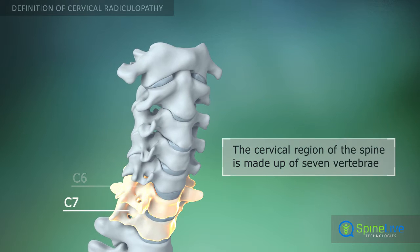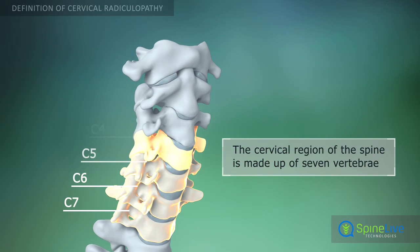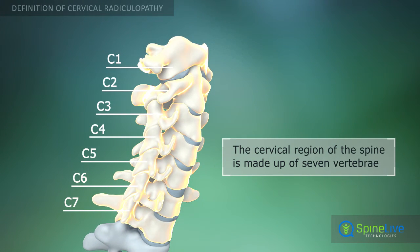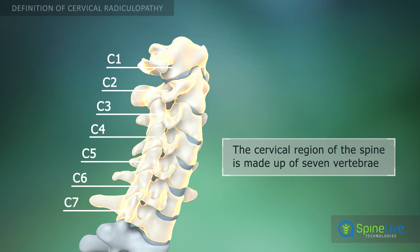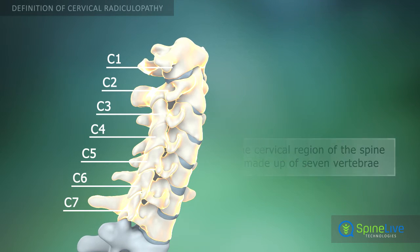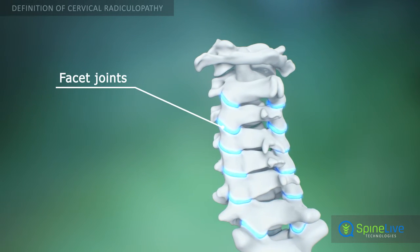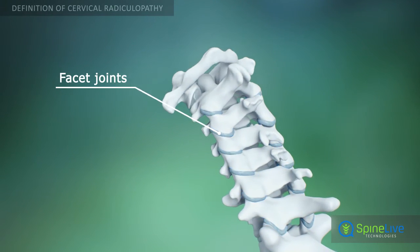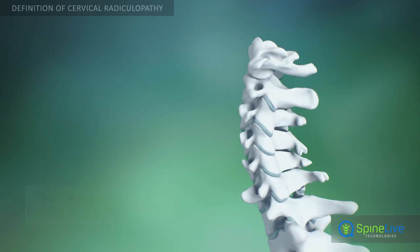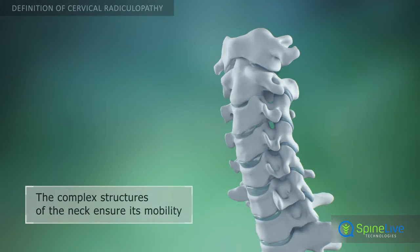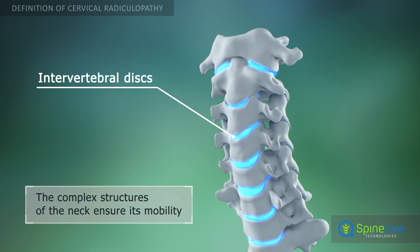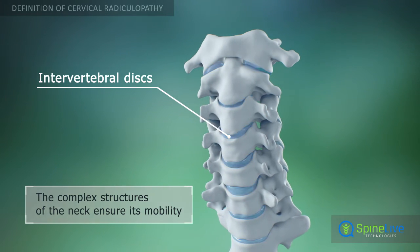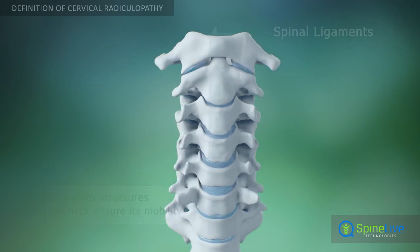The cervical region of the spine is made up of seven vertebrae, which are designated as C1 through C7. The cervical region of the spine is very mobile. Its mobility is ensured by the facet joints, the intervertebral discs, and the spinal ligaments.